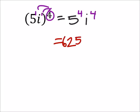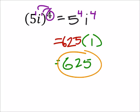And i to the power of 4 is 1. So I have 625 times 1, which would just give us 625. And that's our answer.